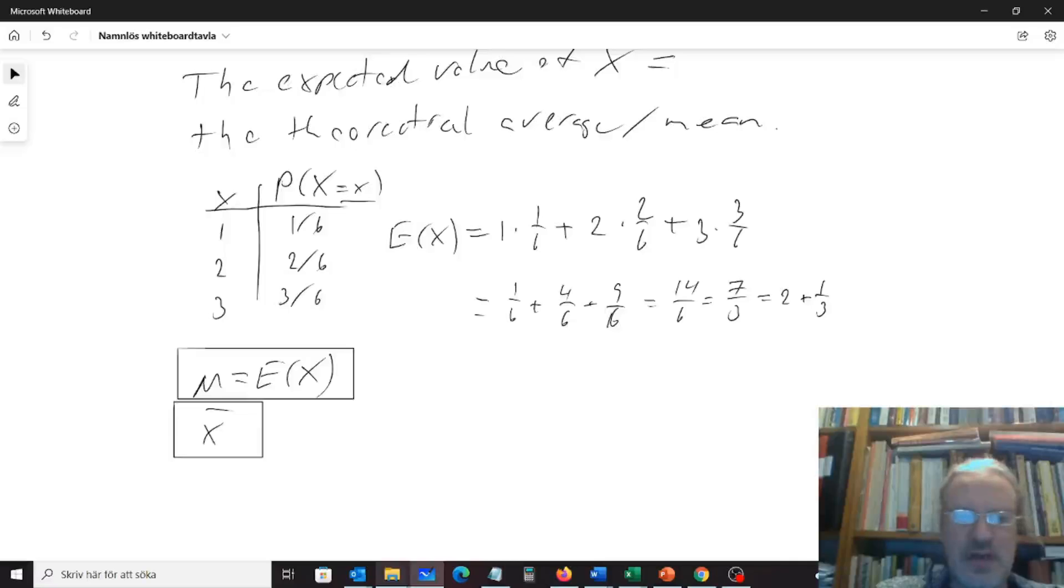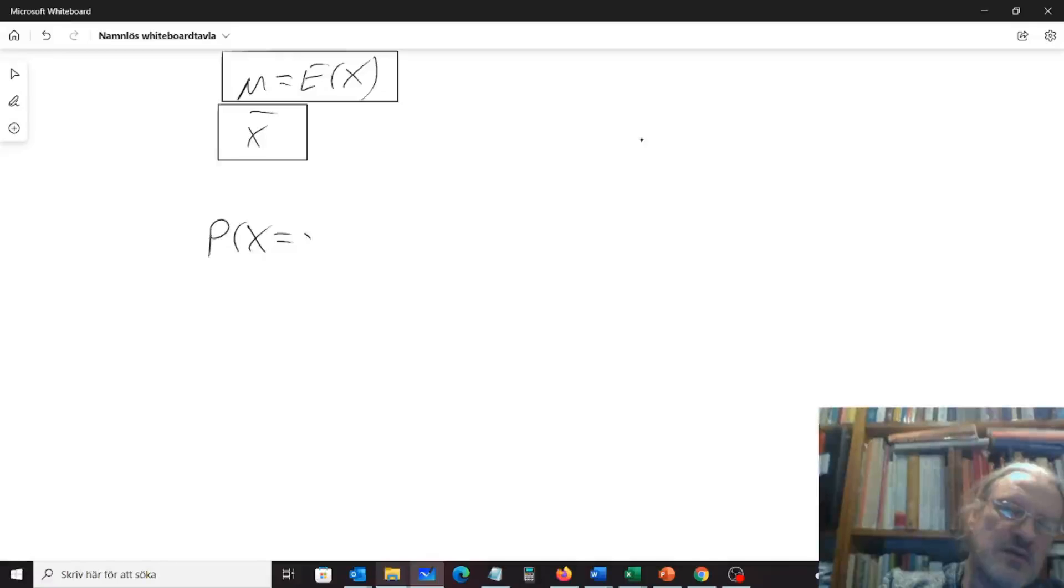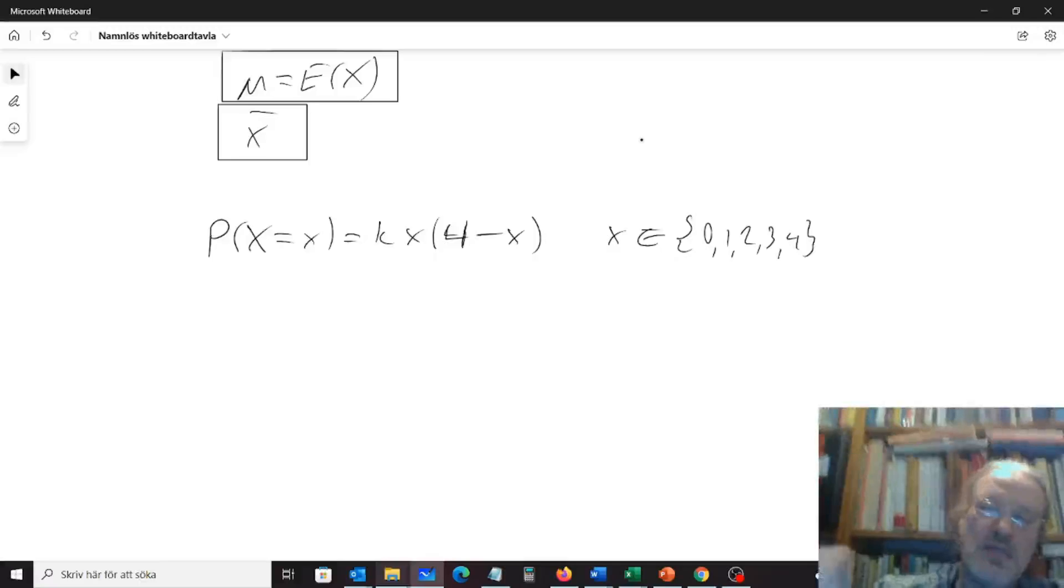So let's look at a little bit of an example question we could have. Say we are given this, that the probability that our X equals x equals k times x times 4 minus x, where x belongs to 0, 1, 2, 3, or 4. And the first question we can get here is find the value of k.